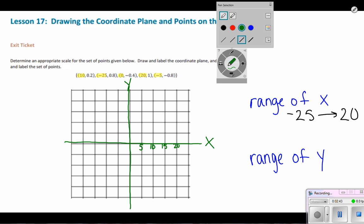So 5, 10, 15, 20, 25. And I'll do the same on the left. Negative 5, negative 10, negative 15, negative 20, negative 25.